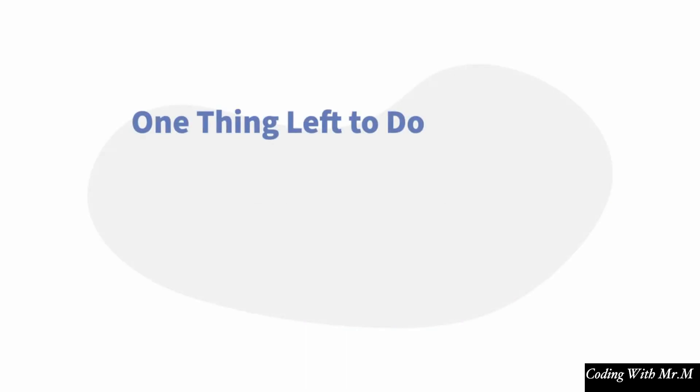At this point we have a working full stack application with user authentication. The last thing we're going to do in this course is see how to release our app so that anybody in the world can access it. At the end of this section, you're going to be able to send your friends an actual URL that they can use to visit your website on their own computer. Now in order to release our application, there are a few steps we're going to need to follow.